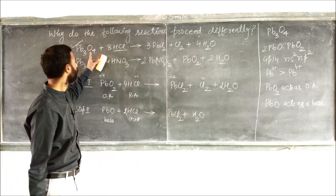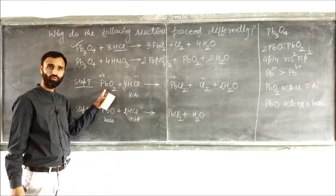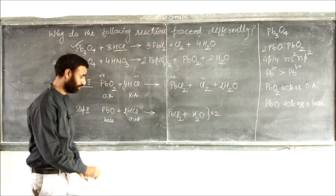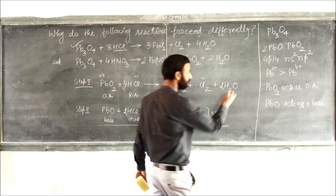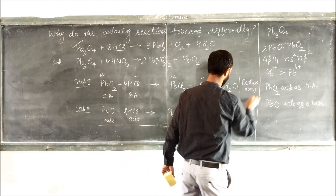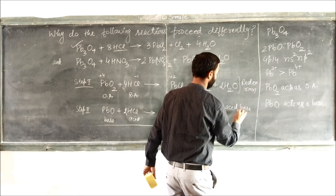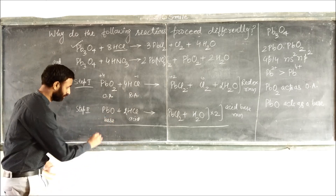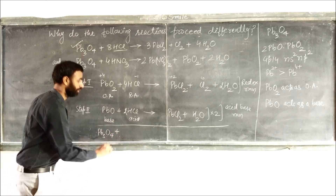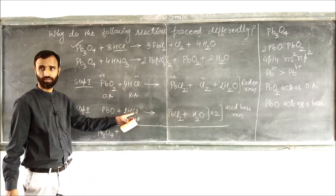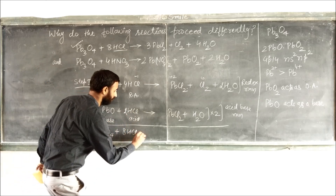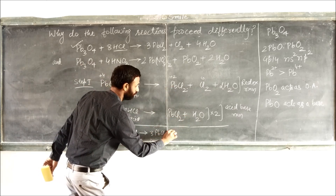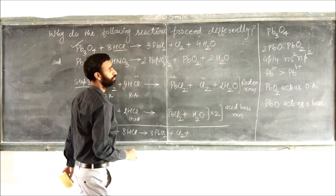Now, in Pb₃O₄ we have 1 PbO₂ and 2 PbO. So the first step equation must be multiplied by 1 and the second step by 2, then added together. The final balanced equation is: Pb₃O₄ + 8HCl → 3PbCl₂ + Cl₂ + 4H₂O. The first part is a redox reaction and the second part is an acid-base reaction.